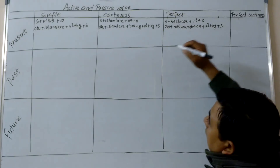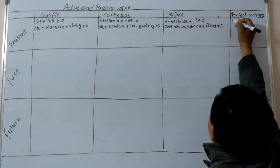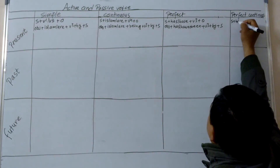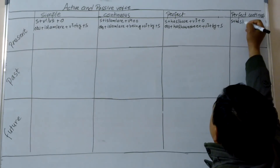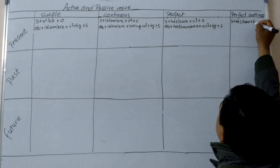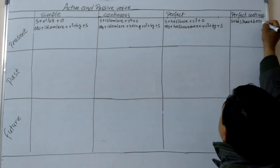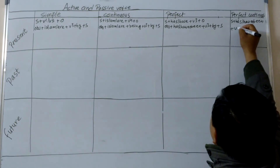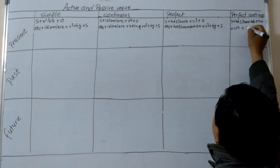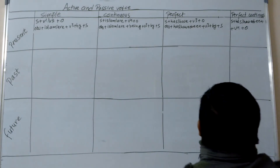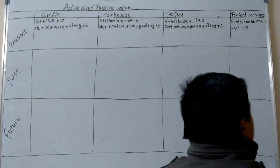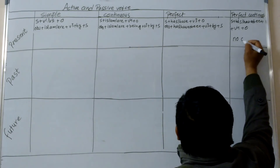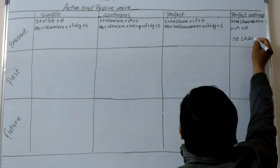In present perfect continuous, the active formula is subject plus has or have been plus V4 plus object, but there is no passive voice. So no change in passive voice here.